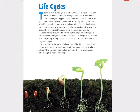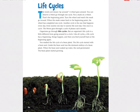Life cycles. The word life cycle means go round. A wheel goes round and you can observe a wheel go through one cycle. Put a mark on a wheel — that's the beginning point. Turn the wheel and watch the mark go round. When the mark comes back to the beginning point, the wheel has completed one cycle. Another cycle is the one that happens every day from sunrise one day to sunrise the next day. One year is a cycle, and the moon goes through a cycle of phases each month.